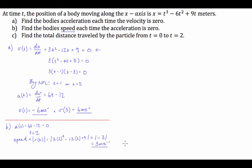The absolute value of -3 is 3 meters per second. That's our solution to part B — the speed of the particle when the acceleration is 0 is 3 meters per second.